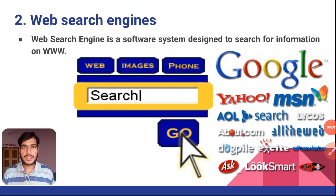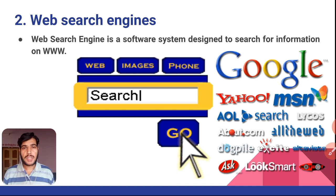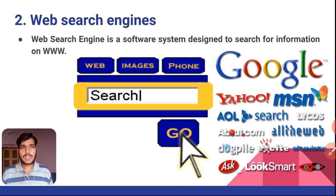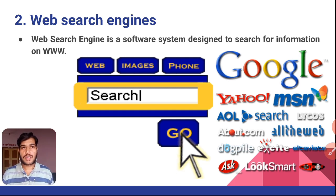The next fundamental of Internet is the web search engine, which is system software specifically designed to search for particular information on the World Wide Web. There are several web search engines available in the market — the most familiar one is Google, or you can make use of MSN, askme.com, and Yahoo. By using these web search engines, we can search for particular information on the internet — website search, image search, video search, etc.